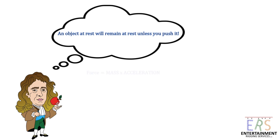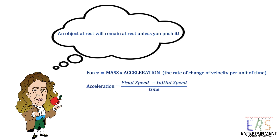This is where we get Force = Mass × Acceleration, where acceleration is defined as the rate of change of velocity per unit of time. We have an equation for that too: acceleration equals the final speed of our load minus the initial speed of our load, all divided by time. We can combine these two together to create: Force = Mass × (final speed − initial speed) ÷ time.